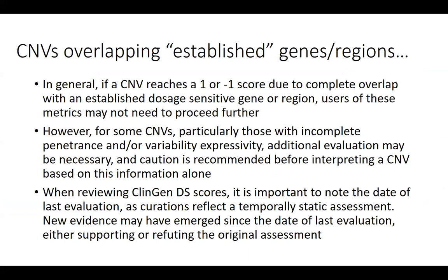A couple of notes on utilizing the dosage sensitivity map scores. In general, if a CNV reaches a +1 or -1 score due to complete overlap with an established dosage sensitive gene or region, users may not need to proceed further. However, for some CNVs — particularly those with incomplete penetrance or variable expressivity — additional evaluation may be necessary, and caution is recommended before interpreting a CNV based on this information alone. When reviewing ClinGen dosage sensitivity scores, it's important to note the date of last evaluation, as curations may reflect a temporary static assessment. New evidence may have emerged since the date of last evaluation, either supporting or refuting the original assessment.